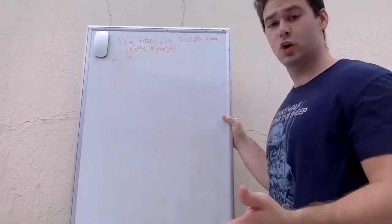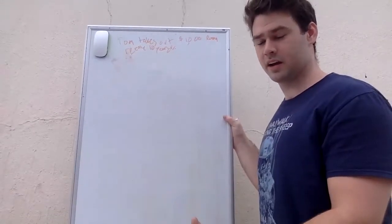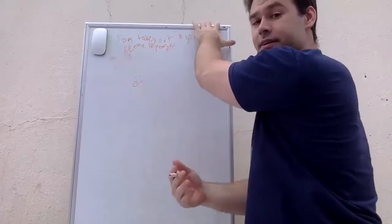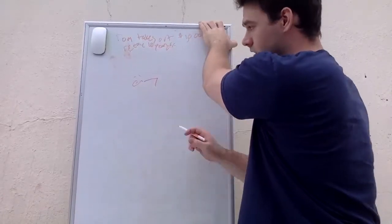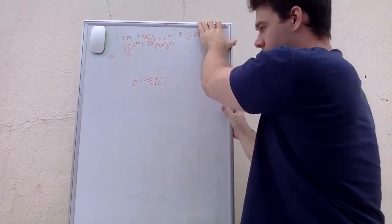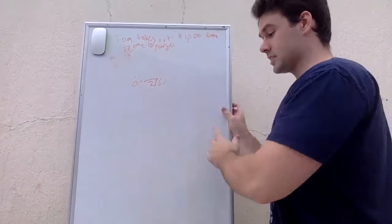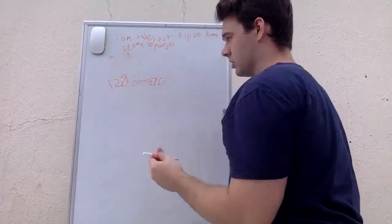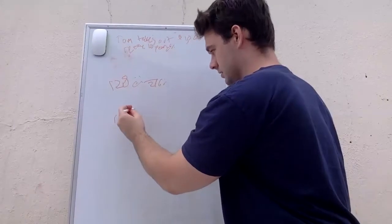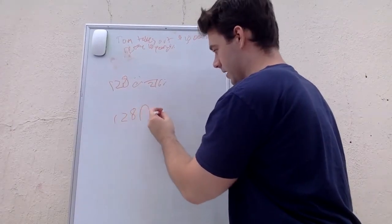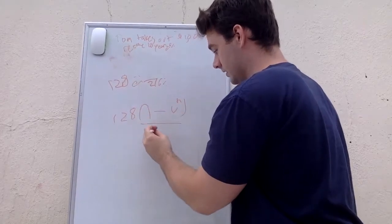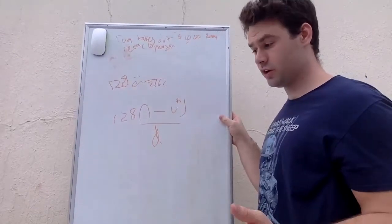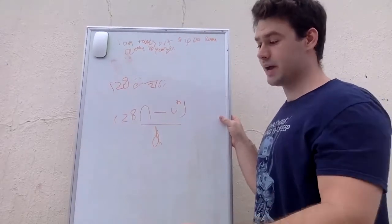Now we figure out how much Tom owes at time 8, since that's when he wants to pay off the loan. At time 8, he has two payments remaining: one at year 9 and one at year 10. So we need the present value at time 8 of those two payments — that is, x × a-double-dot-angle-2 at 6%, which is 128.17 × (1 − v^2) / d.